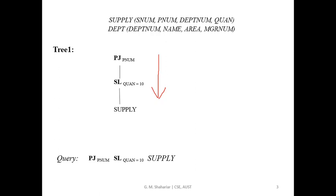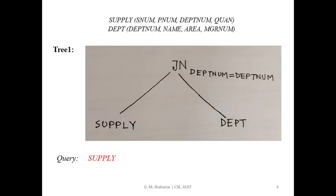We have to write projection P in the second chance, when we write selection percentage equals to 10. So we are going to do the query. This example is the tree. This is a binary operator, which is join. This is the binary operator node. We have the operator tree in the leaf node. This is the join node.